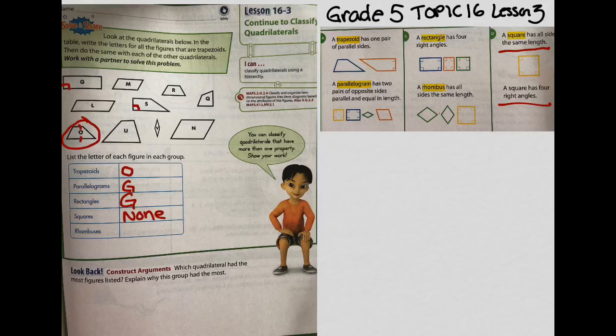Rhombuses. So a rhombus, let's go back and look at our definition just to check. A rhombus has all sides the same length. So all sides the same length. Let's look at, I see a similar shape here in V. All these sides are the same length. I'm going to classify V as a rhombus. Go ahead and complete classifying the rest on your own.